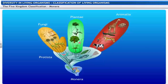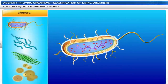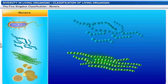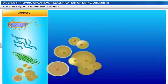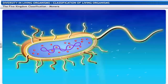The kingdom Monera includes prokaryotic cells which lack an organized nucleus and membrane-bound cell organelles. Some common monerans are bacteria, blue-green algae or cyanobacteria, and mycoplasma. Monera can be autotrophic — synthesizing their own food — or heterotrophic, getting their nutrition from the environment.